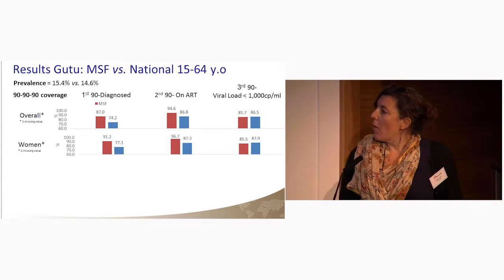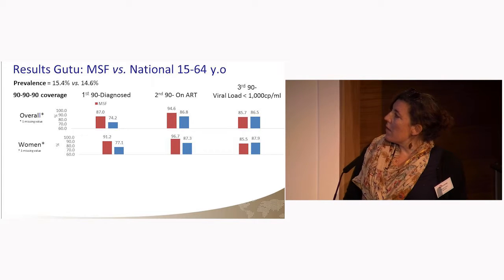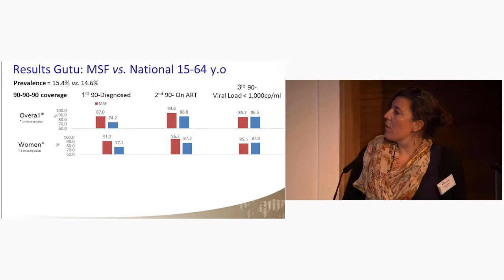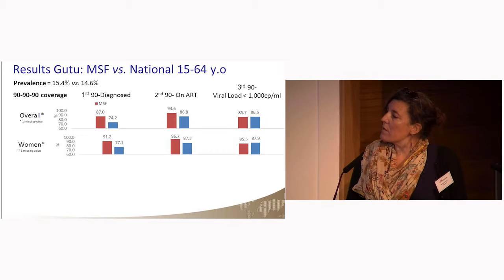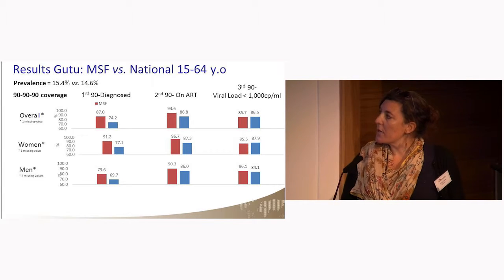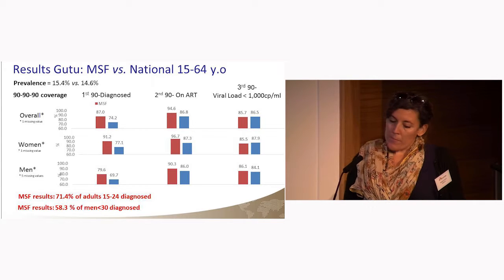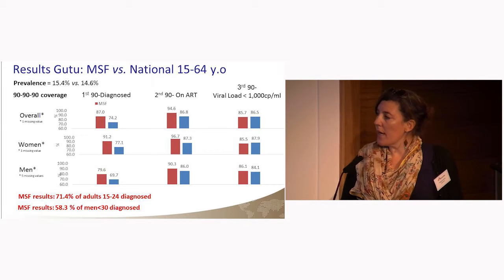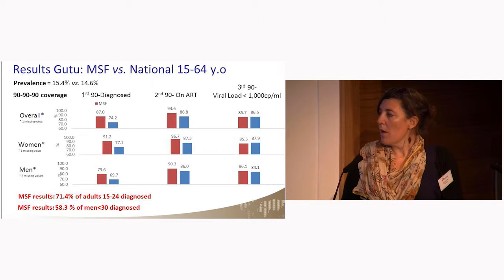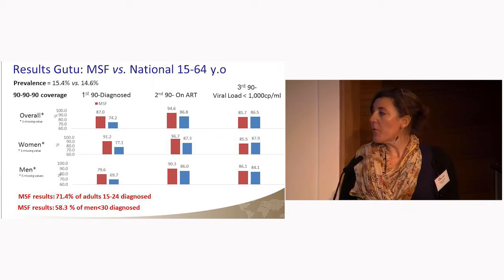Among women, again we can see good results in GU2 and also at national level, with a difference between the MSF survey and the national survey in the first two 90s but no difference in the third. Among men, good results were seen but with a difference in the first 90, and diagnosed coverage was lower among men than women. We could identify gaps in GU2 showing that young adults aged 15–24 were only 71% diagnosed, and young men under 30 were only 58% diagnosed.